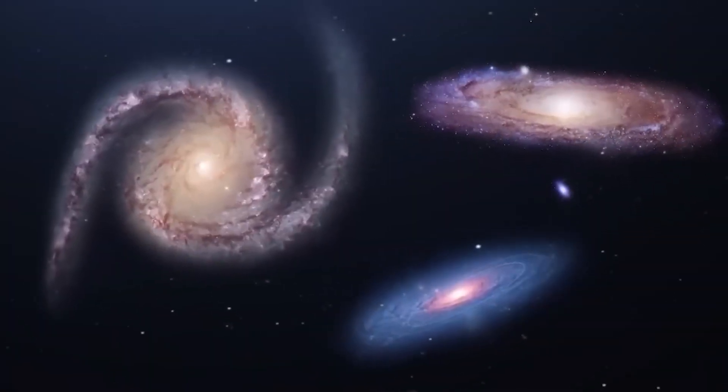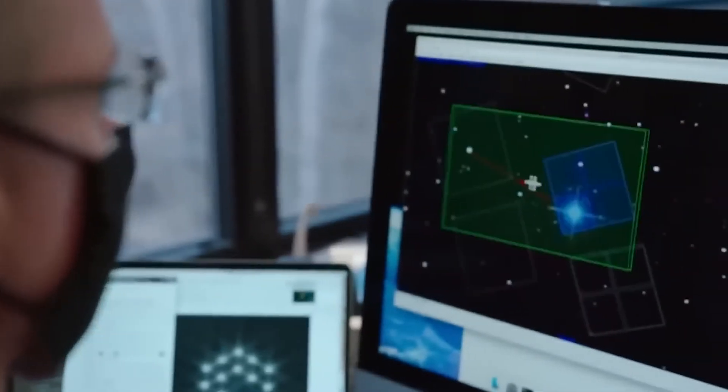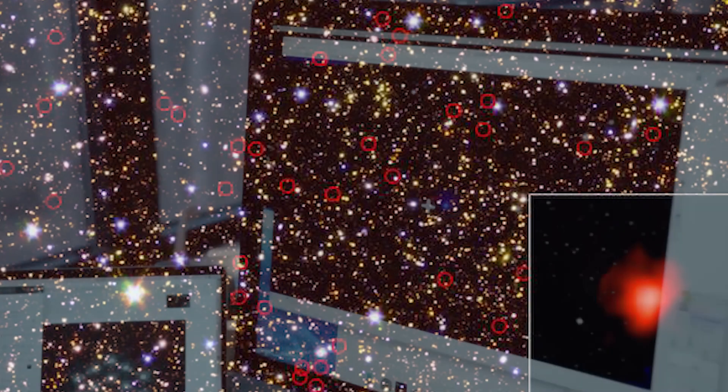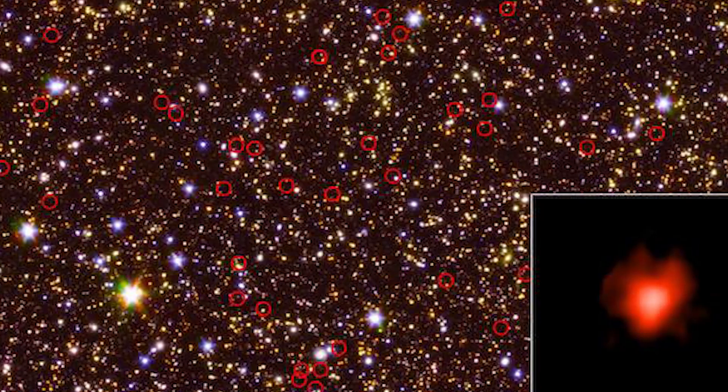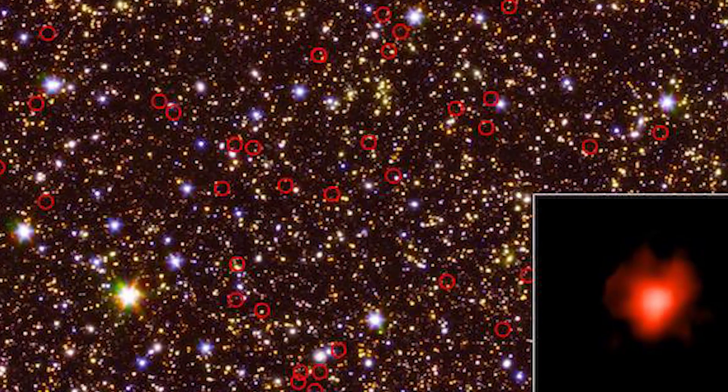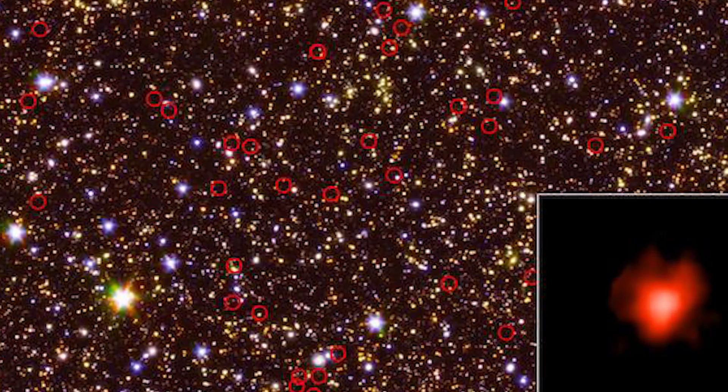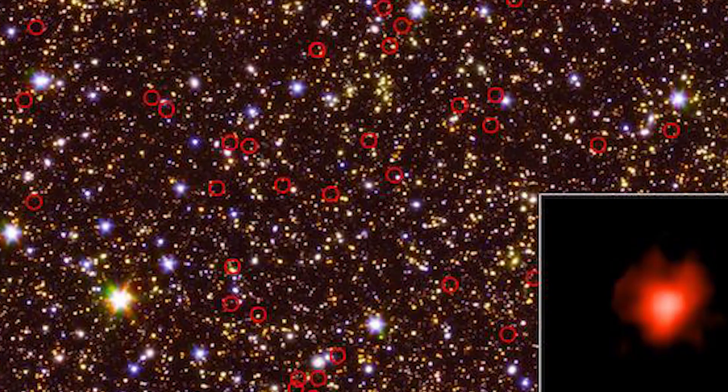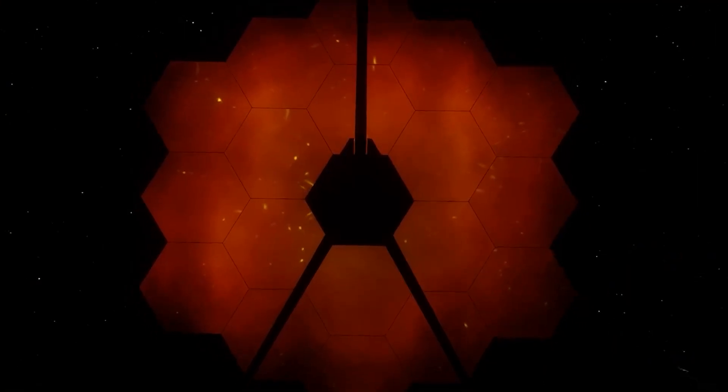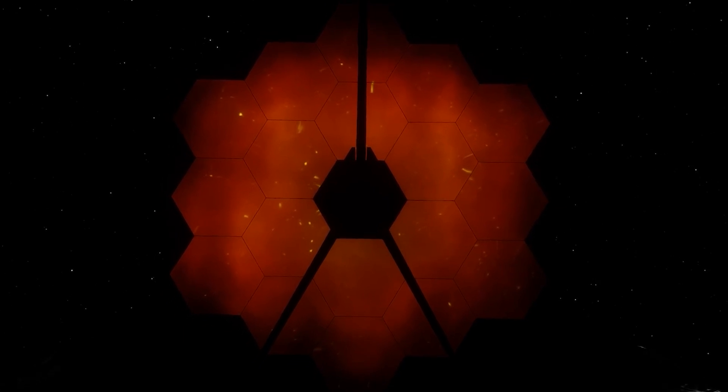Another stunning discovery stumped scientists when researchers found the primordial galaxies at the edge of the universe. They were skeptical about their authenticity. Some thought they might be nearby galaxies in disguise, so they shared the data with other scientists around the world hoping for the best. Amazingly, the James Webb Space Telescope confirmed that these ancient galaxies are real.